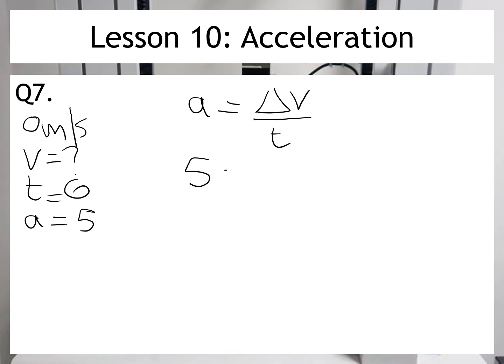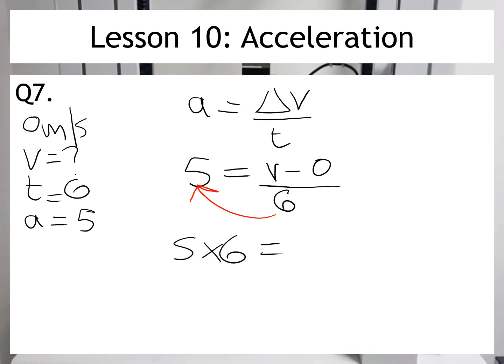Now we're told that a is equal to 5. We know that the change in velocity is the final velocity minus the initial velocity, which is 0. And then we're going to divide that by the time, which we're given as 6. Now I need to rearrange the numbers. So because 6 is on the bottom and I need to move it up to the top, I'm going to multiply it. So 5 multiplied by 6, and v minus 0 is just equal to v. So 5 times 6 gives me 30 metres per second. And that is my final answer.